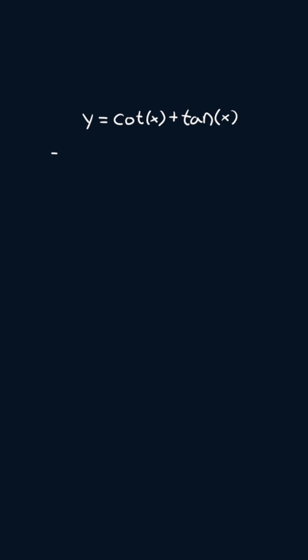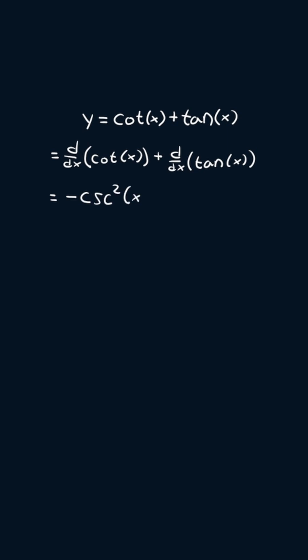I'm going to start by applying the sum and difference rule. So we're going to get the derivative of cotangent of x plus the derivative of tangent of x. The derivative of cotangent of x is negative cosecant squared of x, plus the derivative of tangent of x, which is secant squared of x. And so that will be our answer.